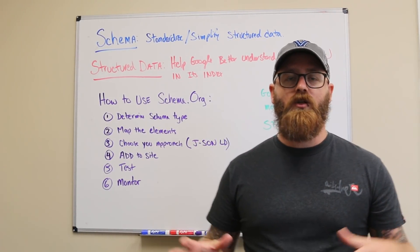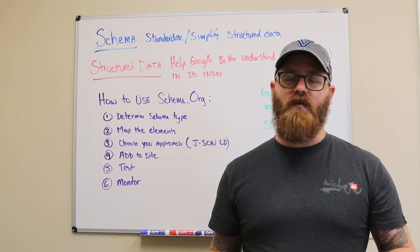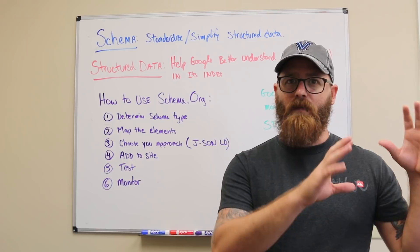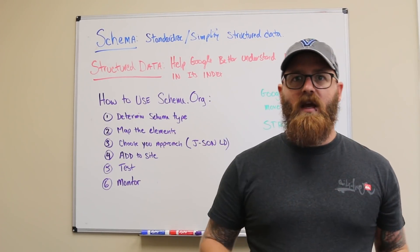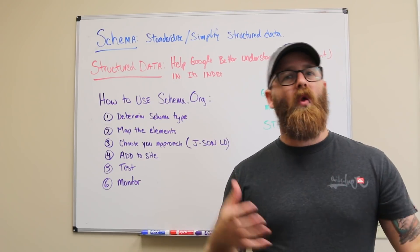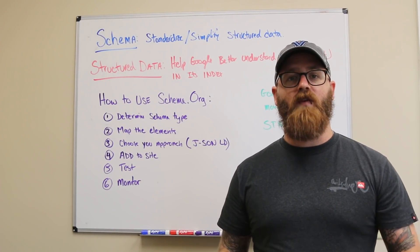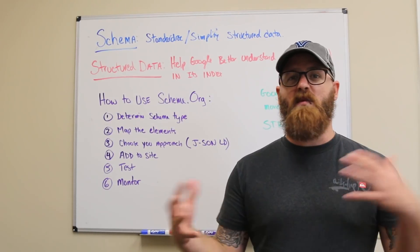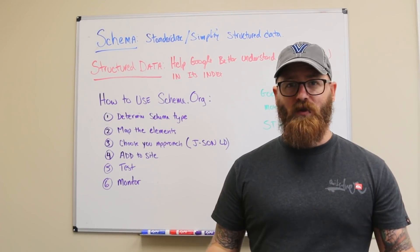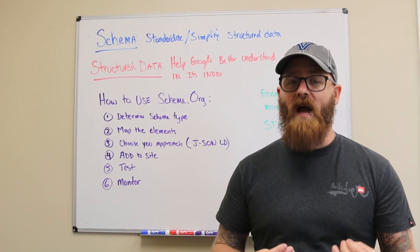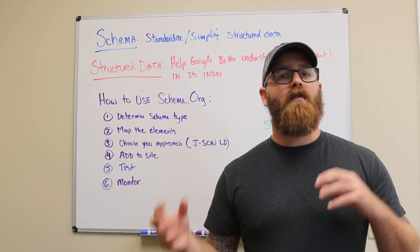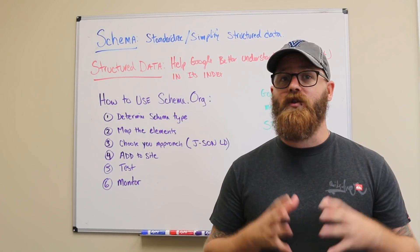So Google is on this mission to change from strings to things. That's a technical way of saying putting something in a database and having it become like a number and an element, as opposed to actually understanding what that concept is. And this is really the whole idea behind semantic search. We've talked about semantic SEO on some of the last episodes. It's really a fancy term for contextual search, really trying to better understand why people are searching, what they're searching, really their intent behind it, so that Google can deliver the best possible solution.